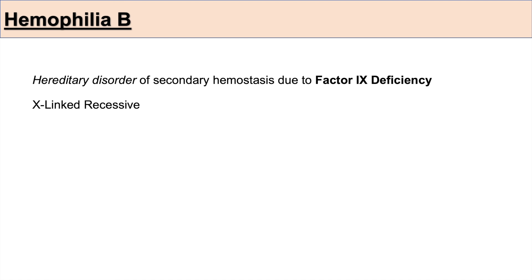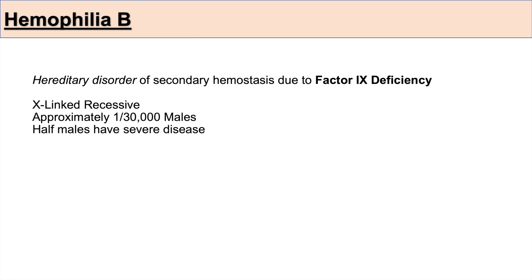Hemophilia B is also an X-linked recessive condition, which means it is a male-predominant condition. Approximately 1 in 30,000 males have hemophilia B, and half of the males with this condition have a severe disease form.